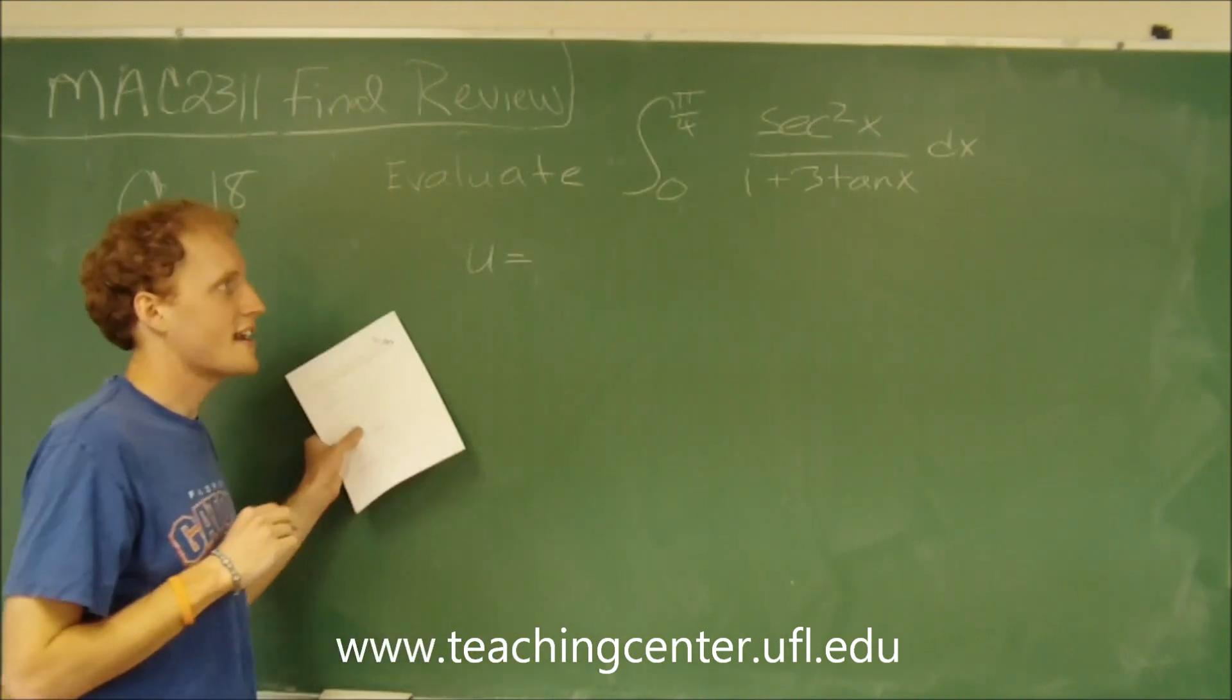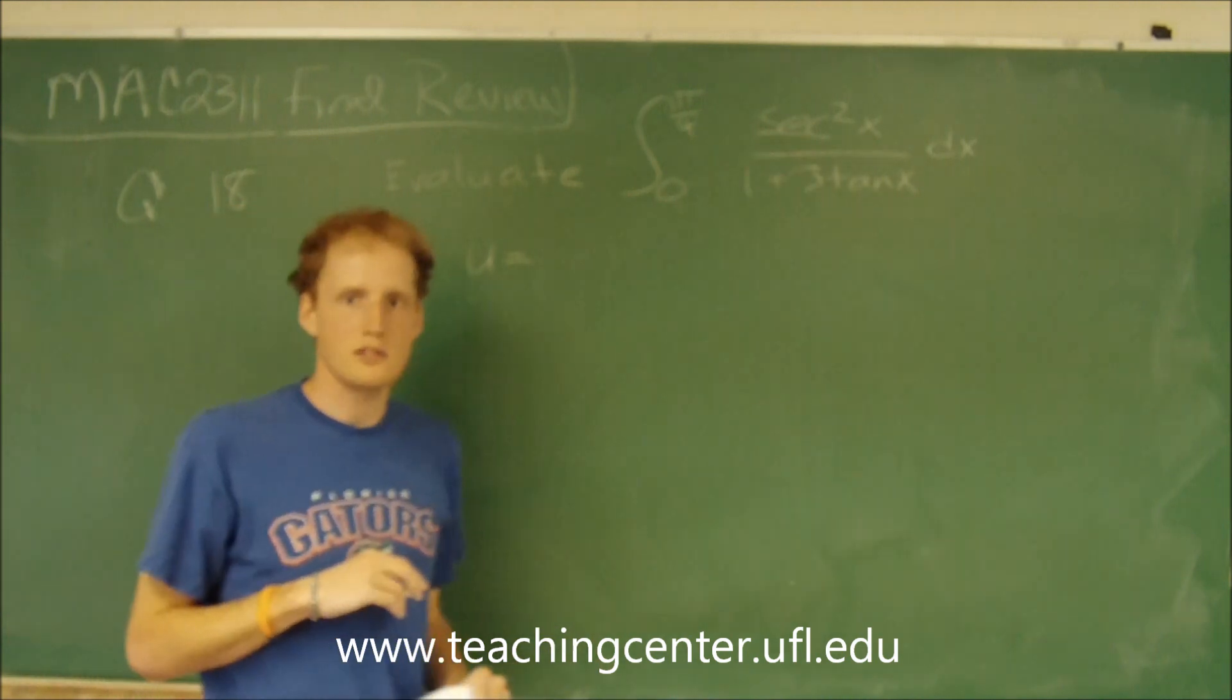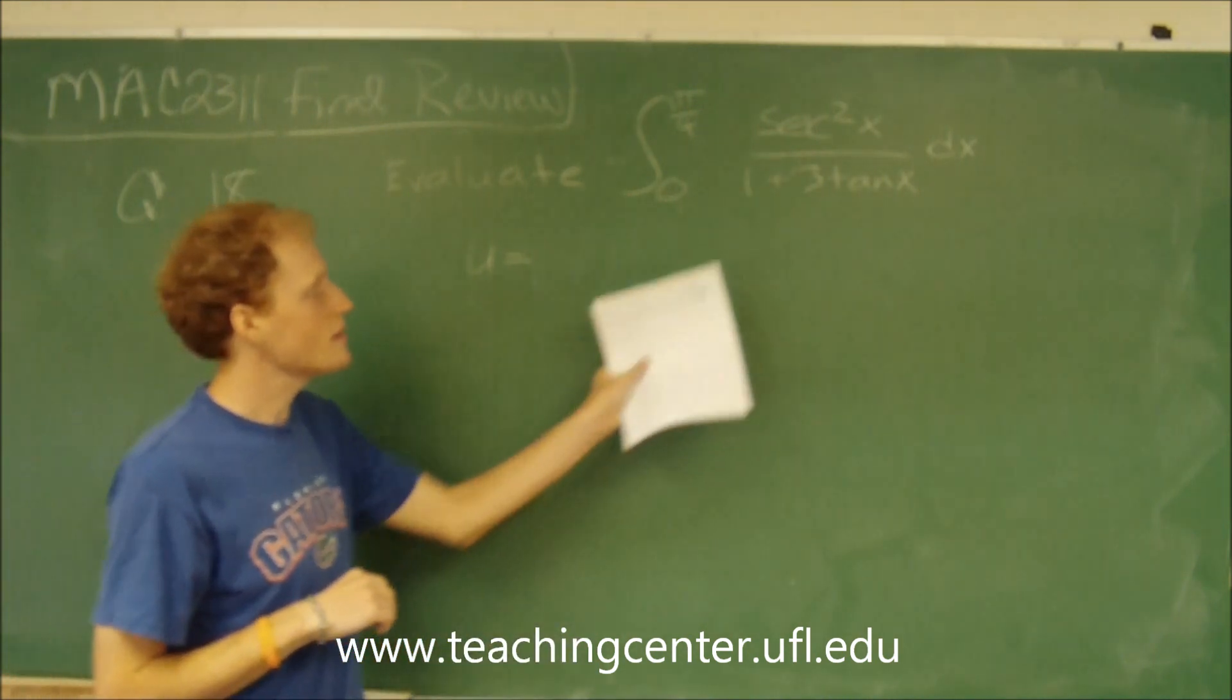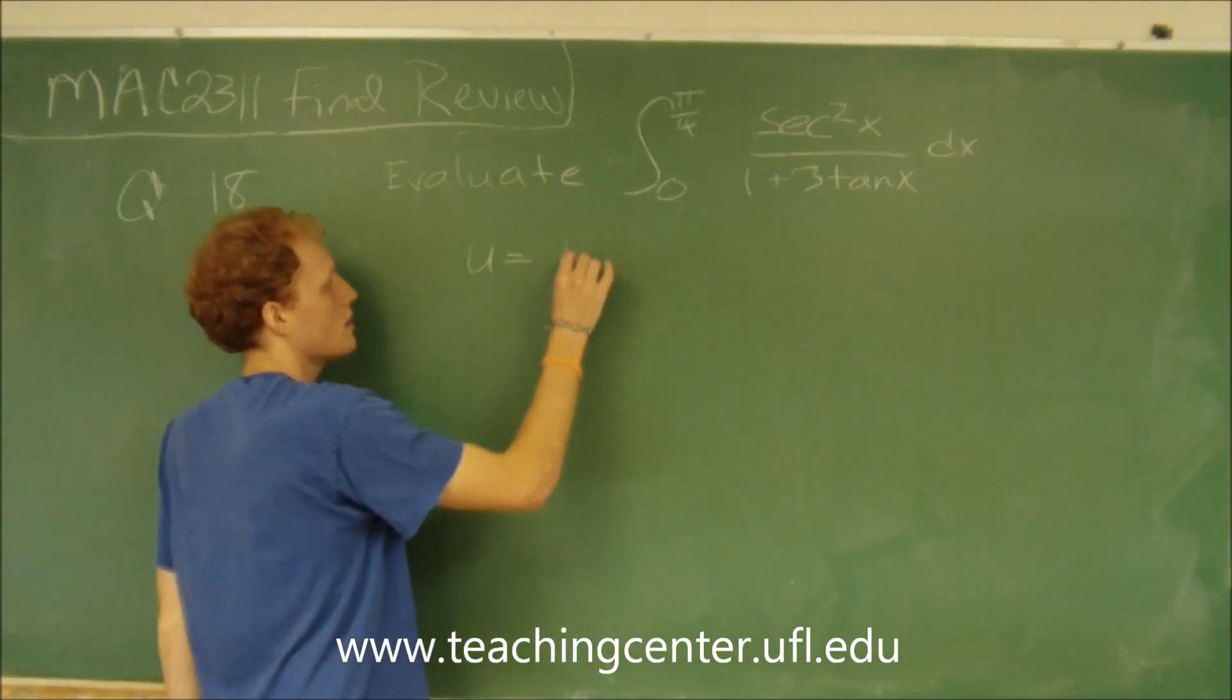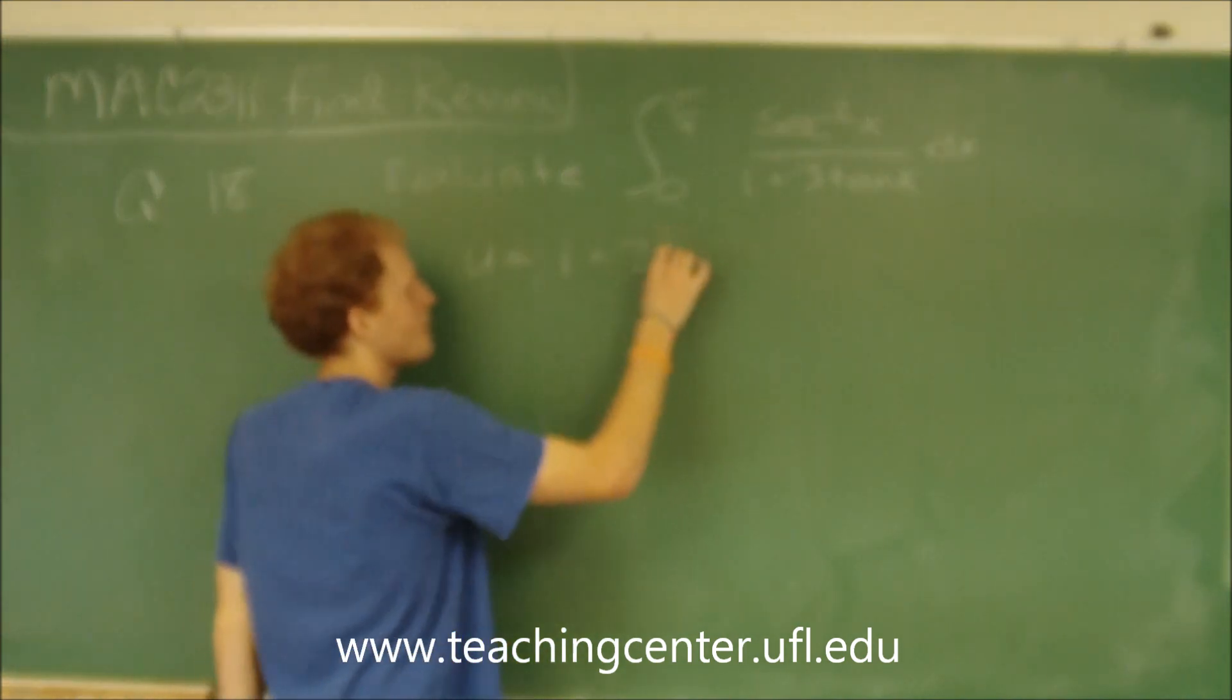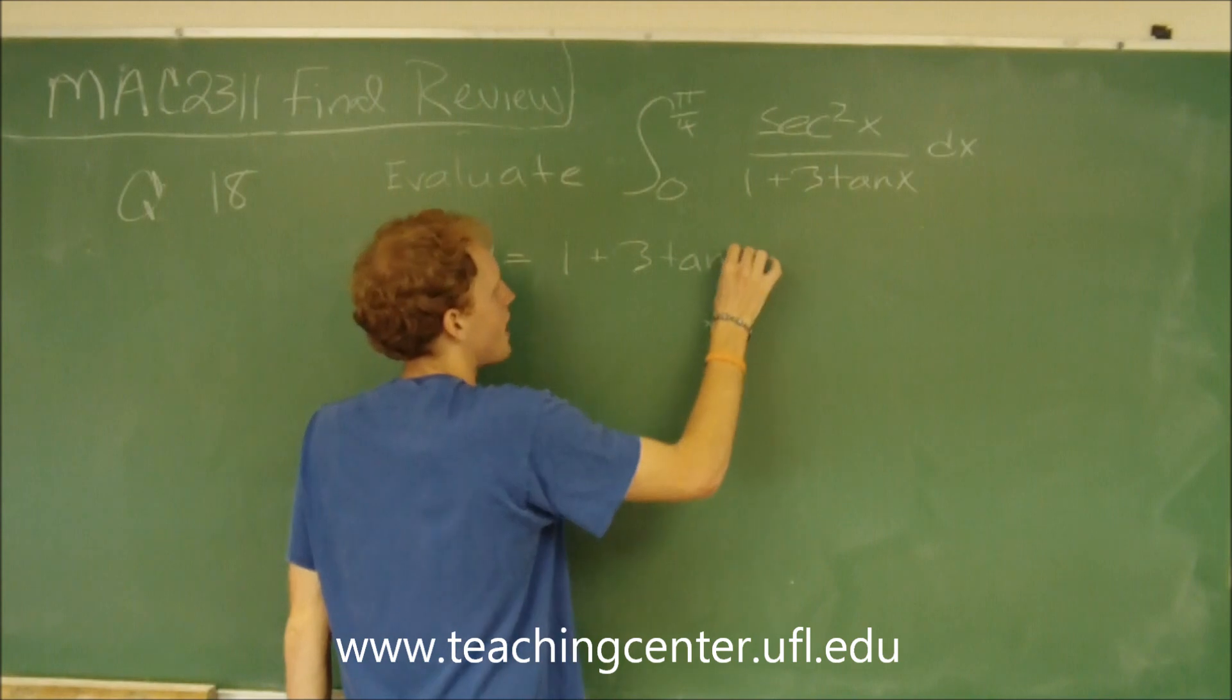We find the u such that its derivative is also in the problem. So I'm going to say let's choose u to equal the entire denominator. So 1 plus 3 tangent of x.